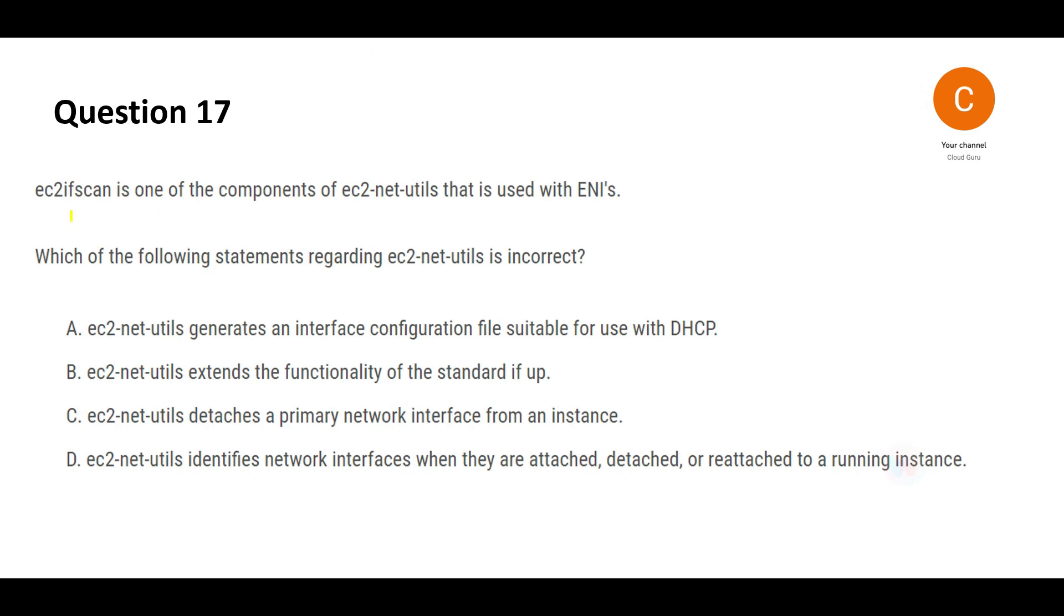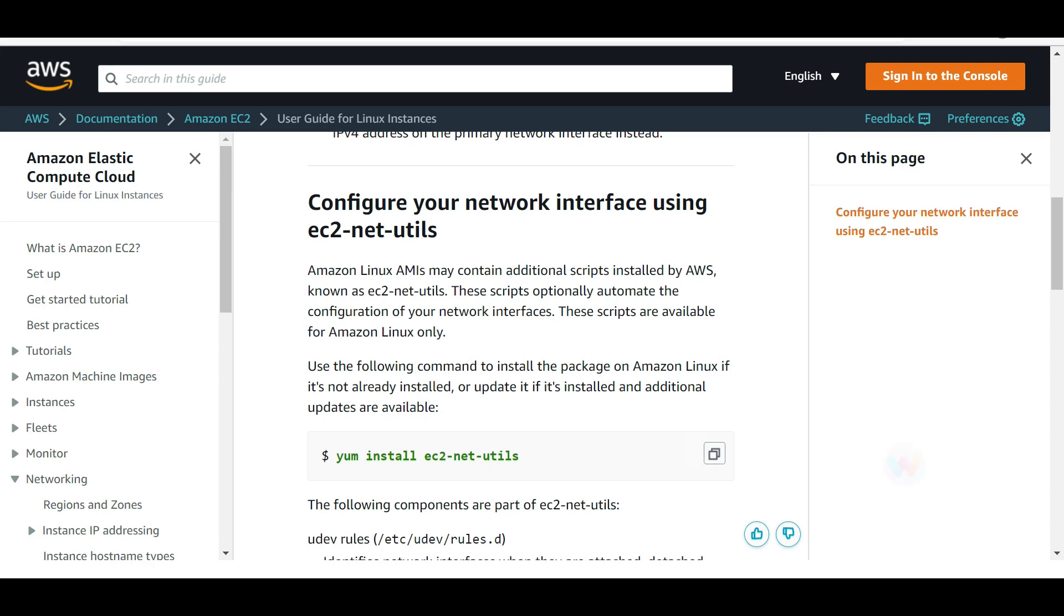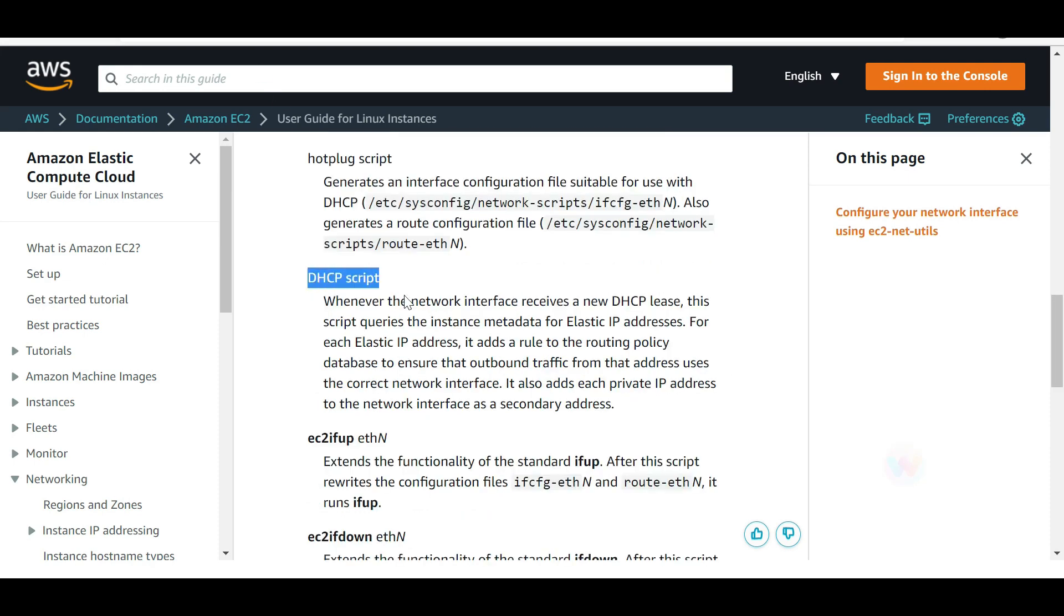Let's look at this question. This question is all about EC2 net-utils. We need to say what is incorrect about this net-utils. Let's jump into the options. We have four of them. The first one says it generates configuration files for DHCP. So this is the documentation for EC2 net-utils. We see this DH script one. This is an option, hence we would strike this out because this is true and we want an answer which is false.